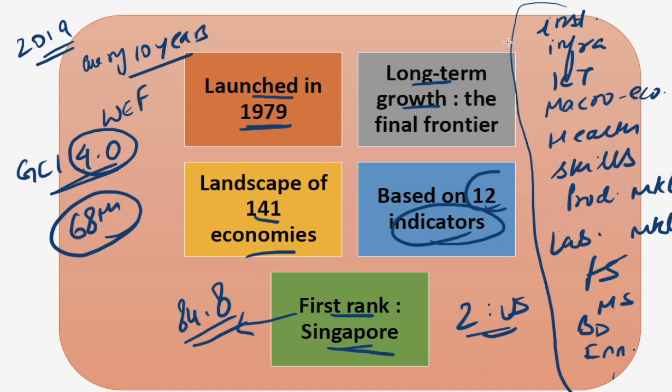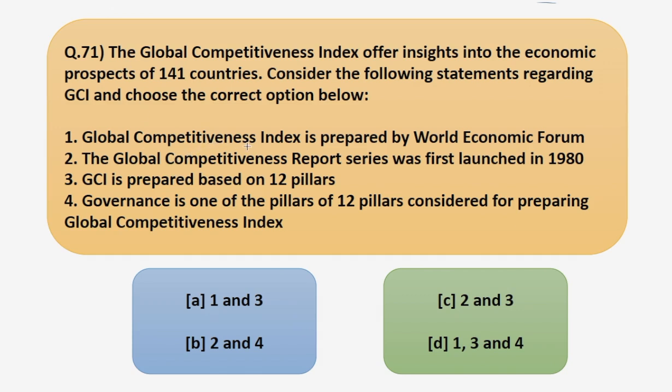Now let's look at the statements in the question. First statement: Global Competitiveness Index is prepared by World Economic Forum - this is true. Second: the report series was first launched in 1980 - this is not true because it was launched in 1979, and in 2019 it is the fourth time that GCI is there. Third: GCI is prepared based on 12 pillars - this is also true. Fourth: governance is one of the 12 pillars - this is not true. So the correct statements are one and three. The answer is option A.